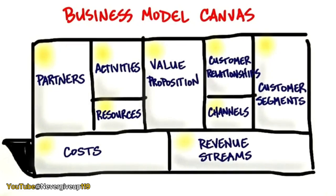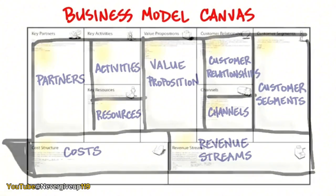If you're watching this video, the first thing I suggest is stop — go to businessmodelgeneration.com, download the canvas, and print out a bunch of copies. Then get a bunch of yellow stickies and a red pen, because that's what you're going to be using for the next couple of weeks.